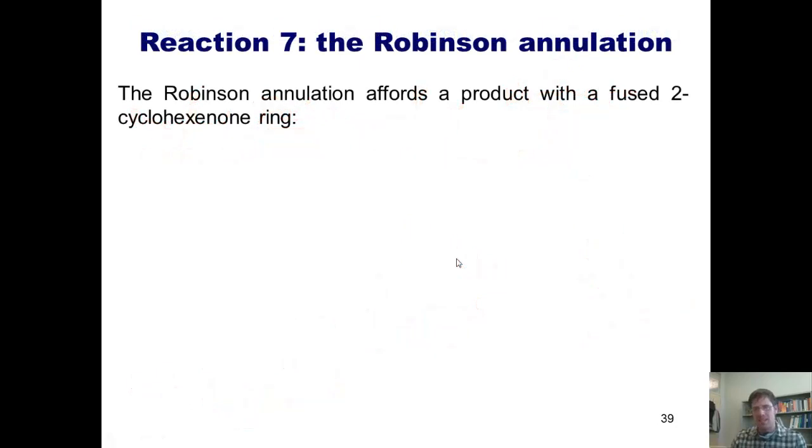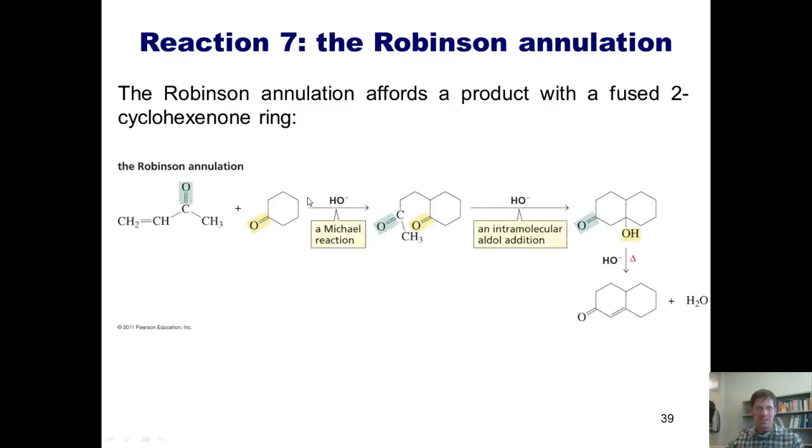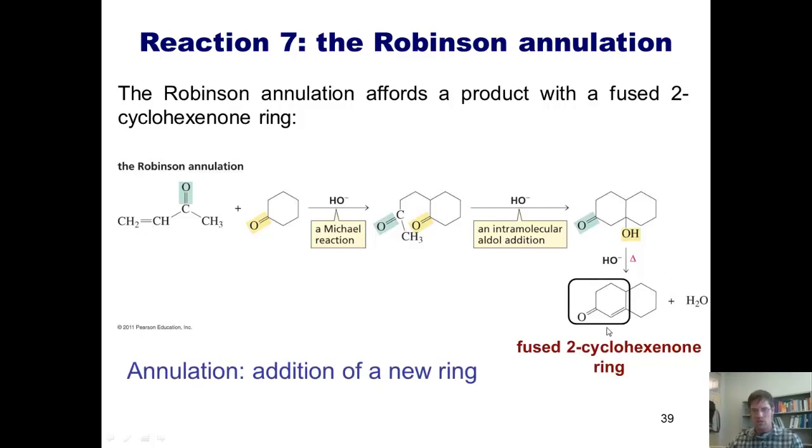The Robinson annulation is a sweet application of this kind of chemistry. Let's look at our starting materials and compare them with the product. We start with a ketone and react it with another ketone that's alpha-beta unsaturated, and we ultimately end up with a fused cyclohexenone. This is an alkene, a ketone fused to this ring like this. You might look at this and say, say what? We start with a ketone, react it with an alpha-beta unsaturated ketone, and end up with a fused cyclohexenone ring. So how do we do that?